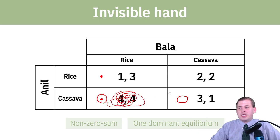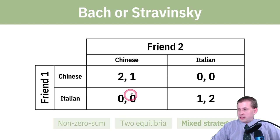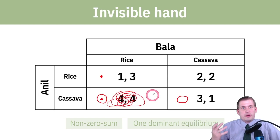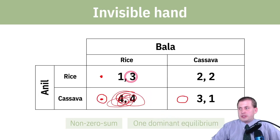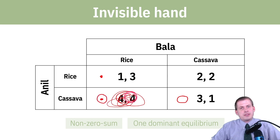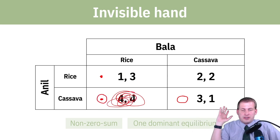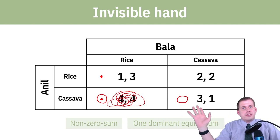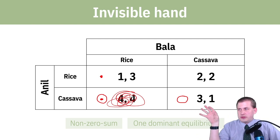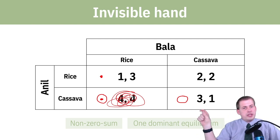This is an example of a non-zero-sum game — there's no winner and loser; they both end up with four happiness points. There's one dominant equilibrium where they will always choose those options. Where you have a circle and a dot lining up, that is what is called a Nash equilibrium — that is where they will settle regardless of the other person's choices. This game has one Nash equilibrium.